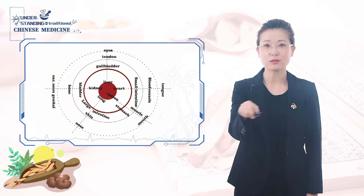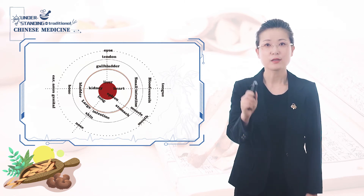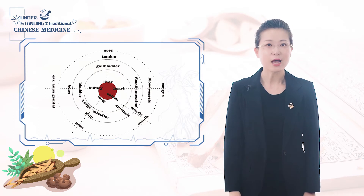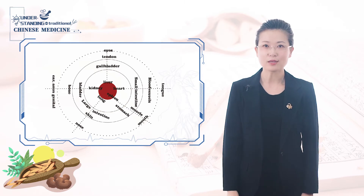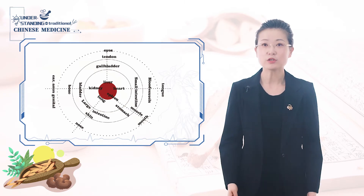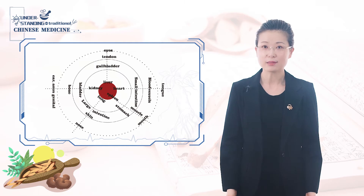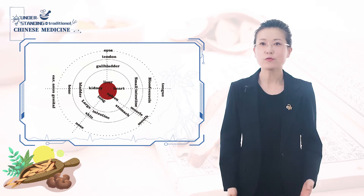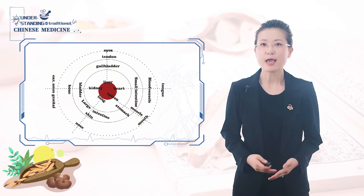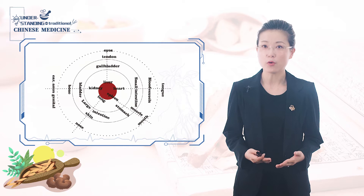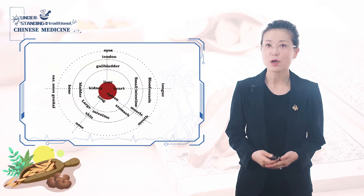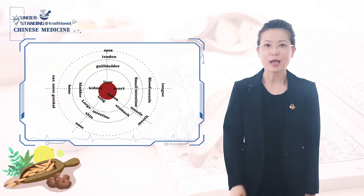In the second circle, there are 5 fu organs, i.e. small intestine, stomach, large intestine, urinary bladder, and gallbladder. Of course, we have one more fu organ, i.e. san jiao, which I will explain later.